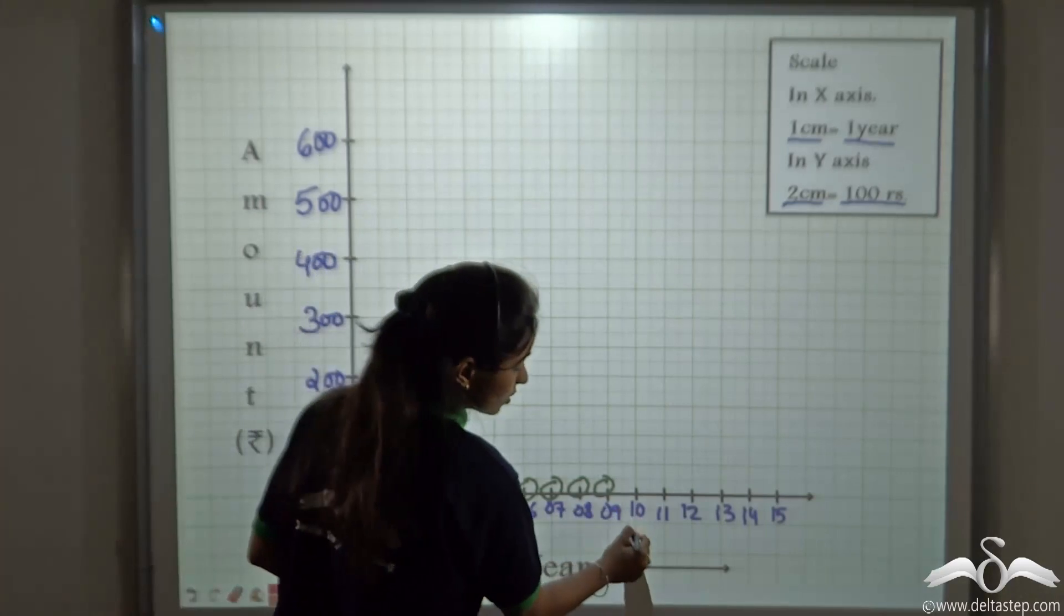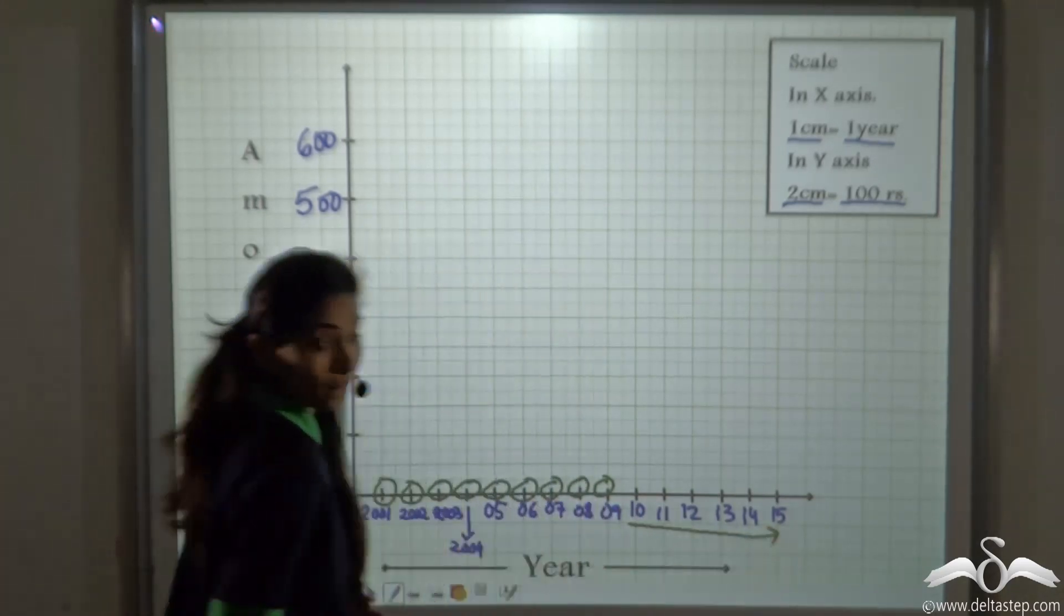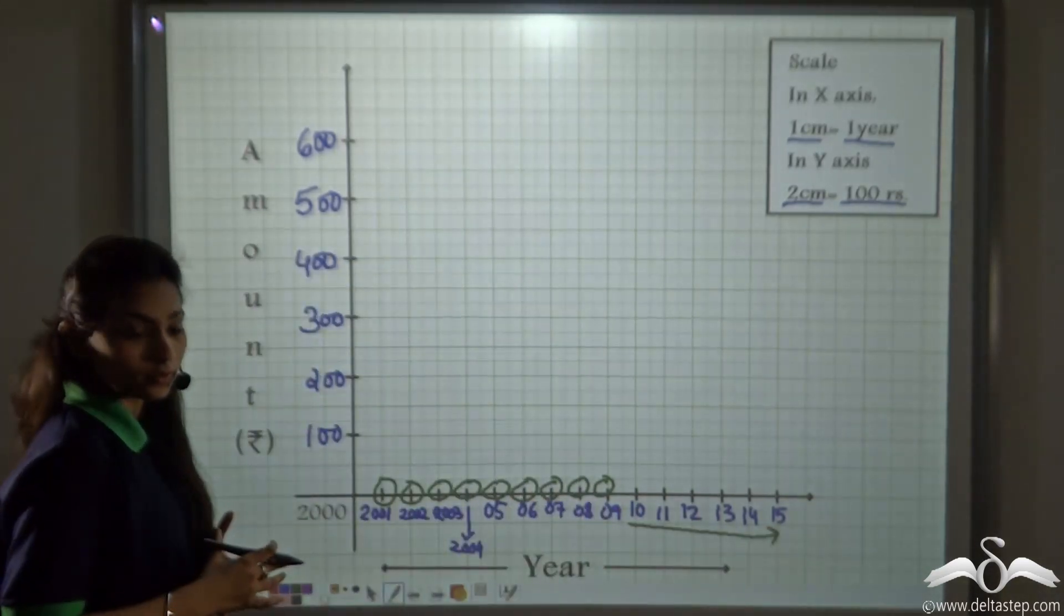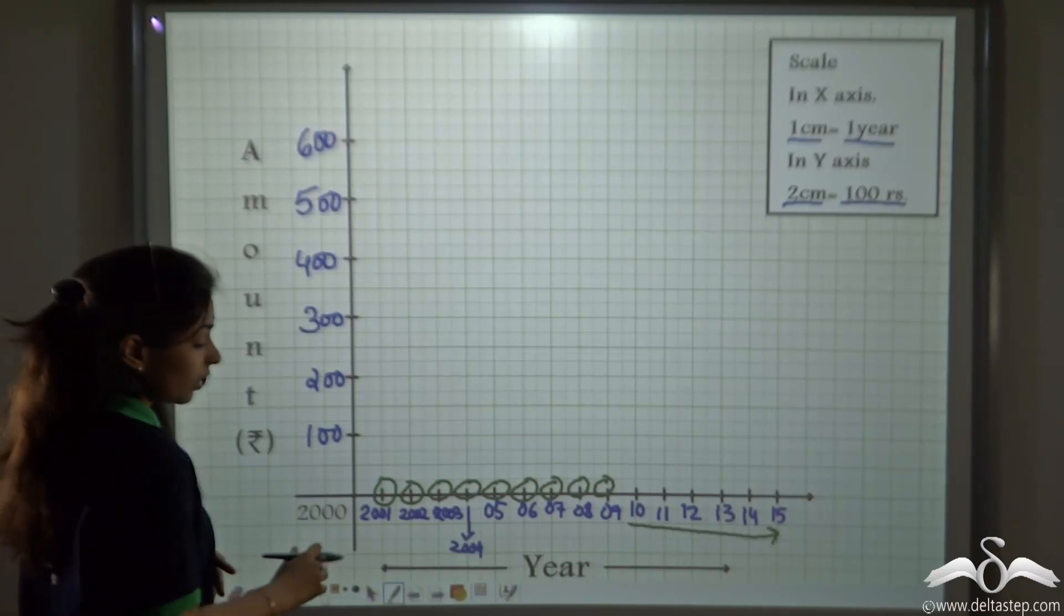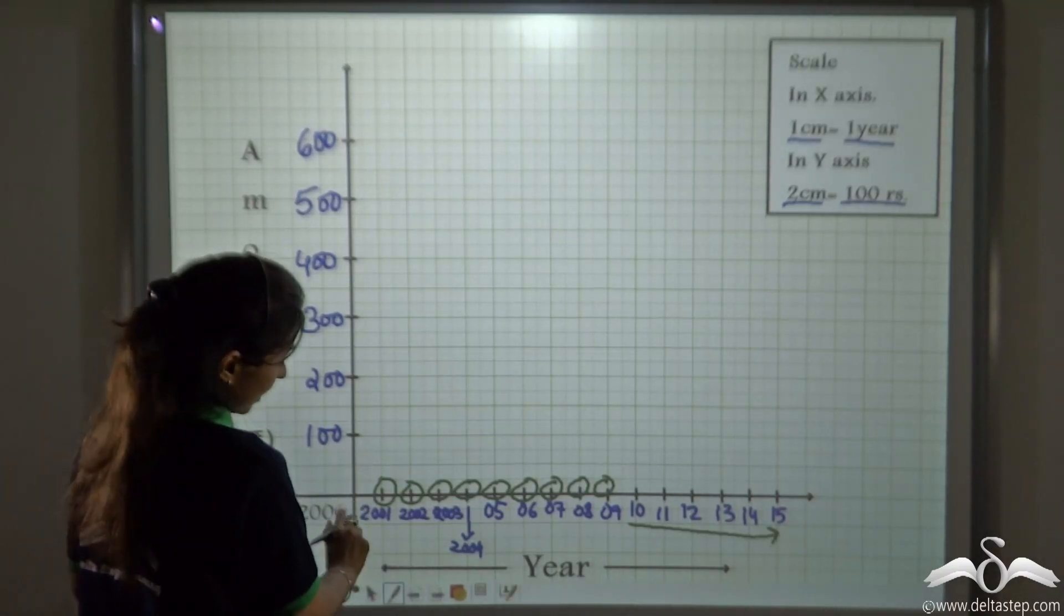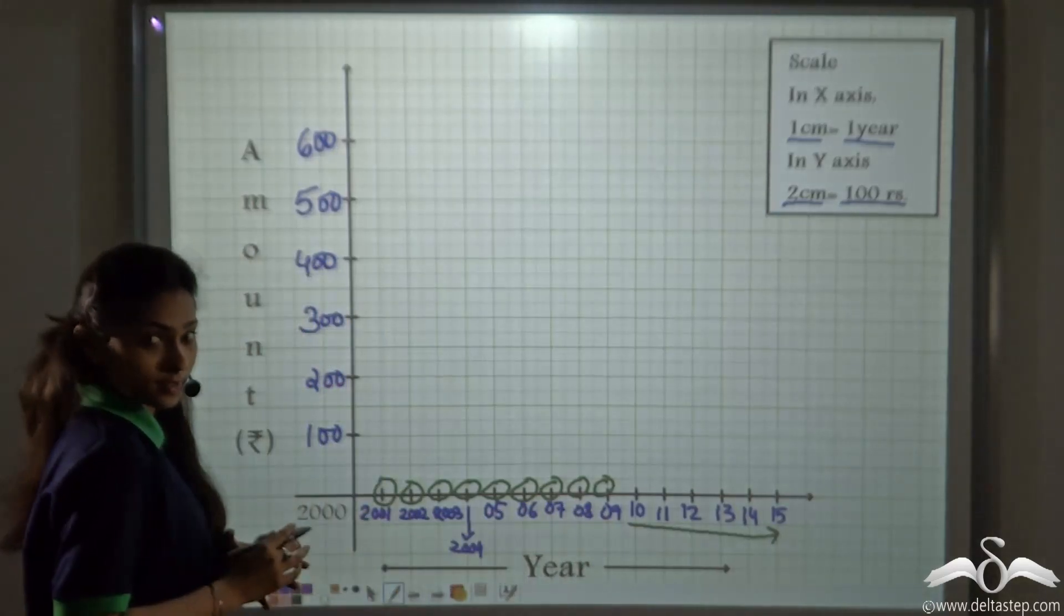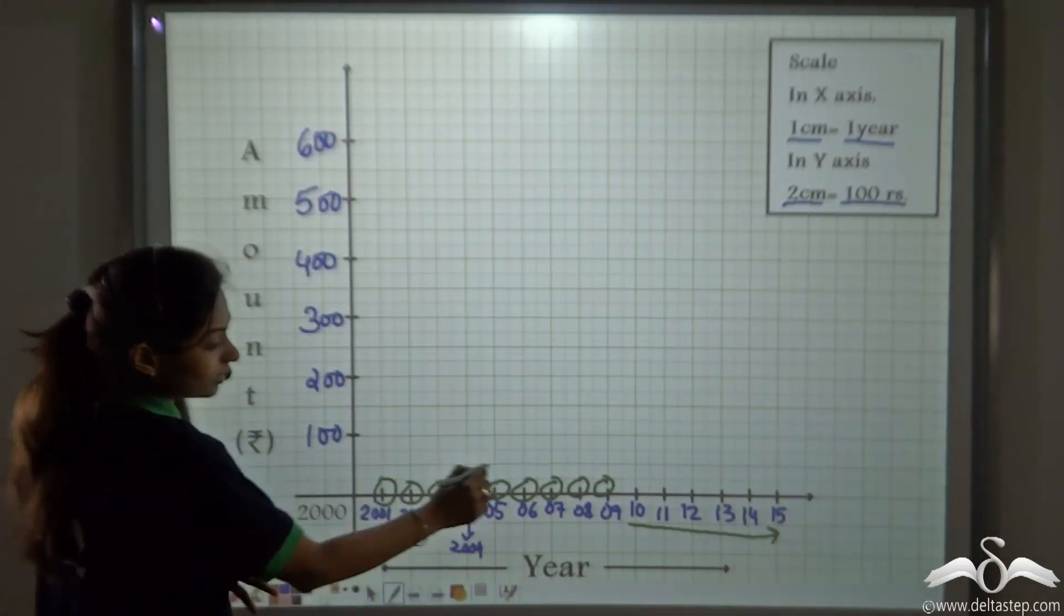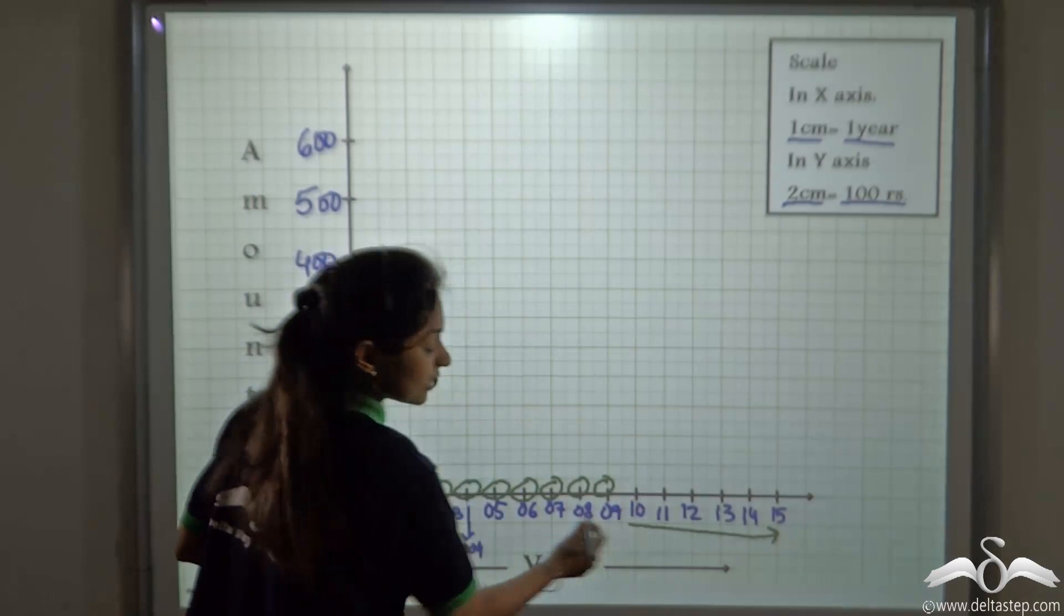I may have started it from 2010 till 2015. That would make my graph look neater. But then if I do that and skip the years, say 2001 to 2009, I skip these years and write the graph from 2010.